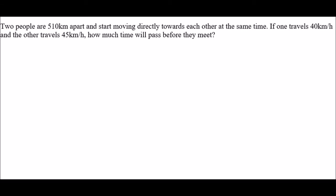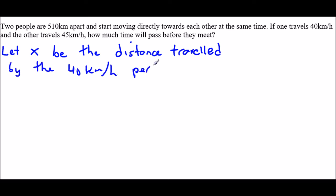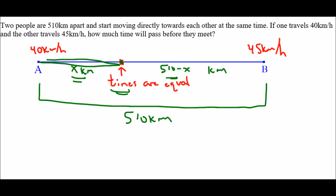So that sort of tells me how I might set up this equation. So first of all, let's define X since I already used it. So I'm going to let X be the distance traveled by the 40 kilometer per hour person.